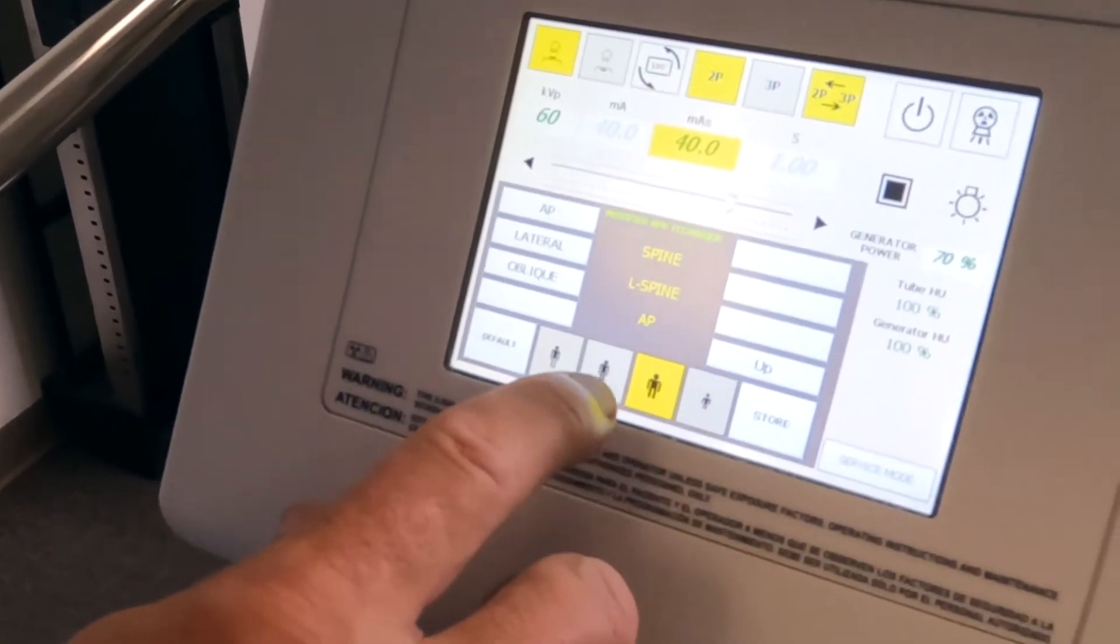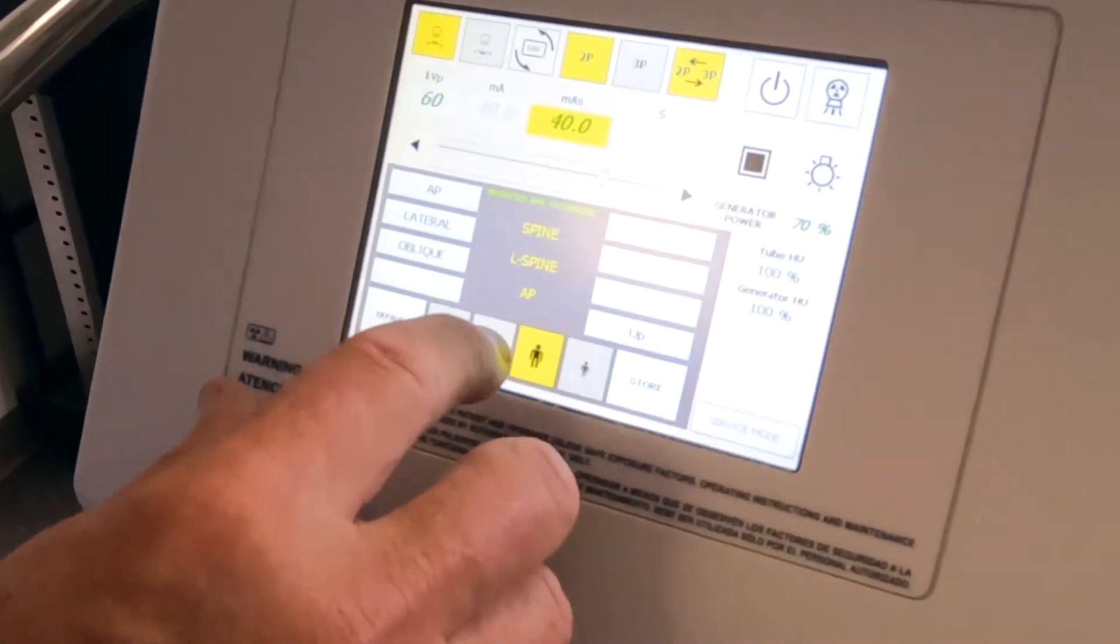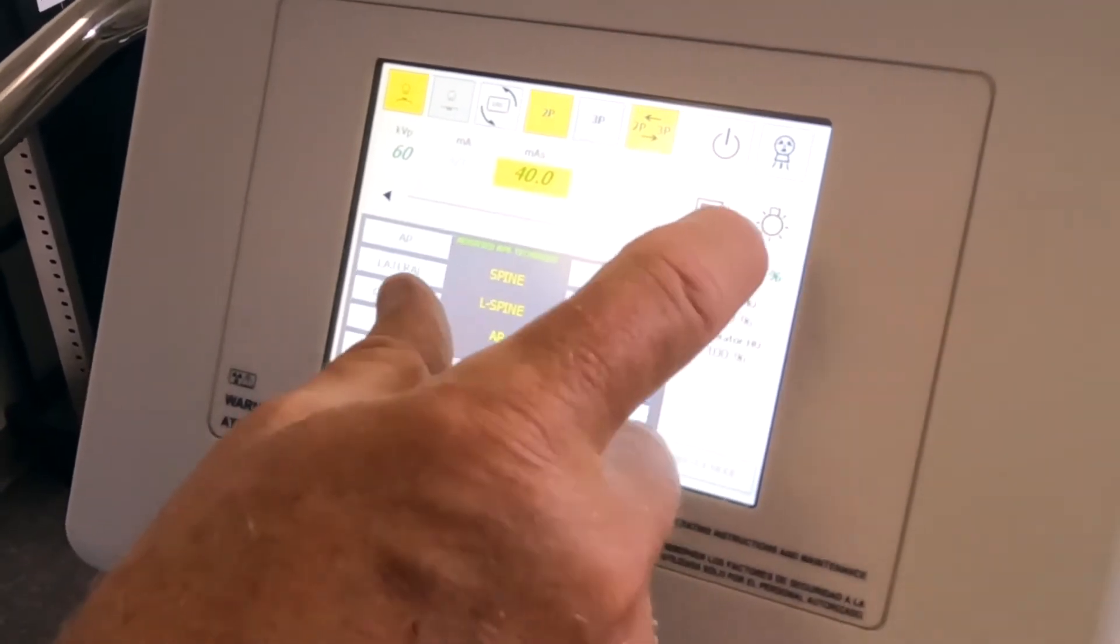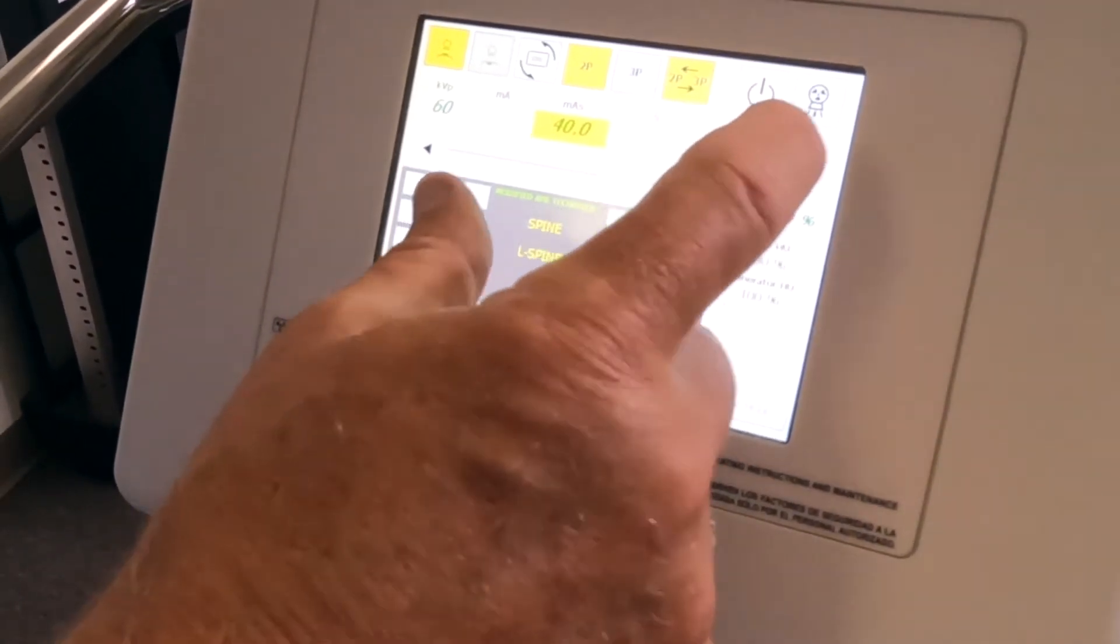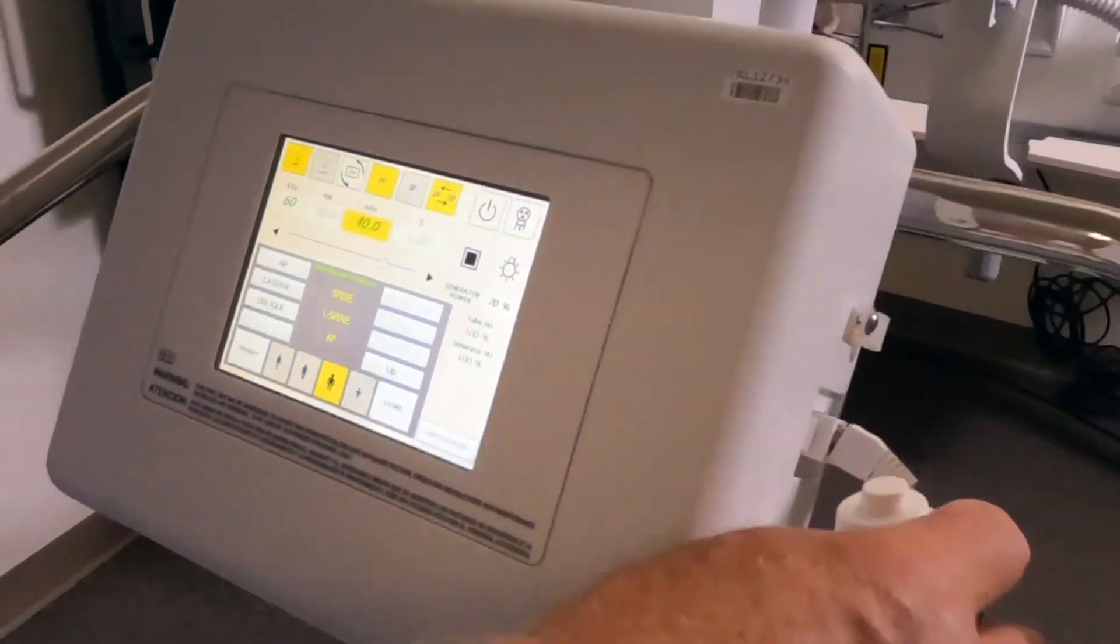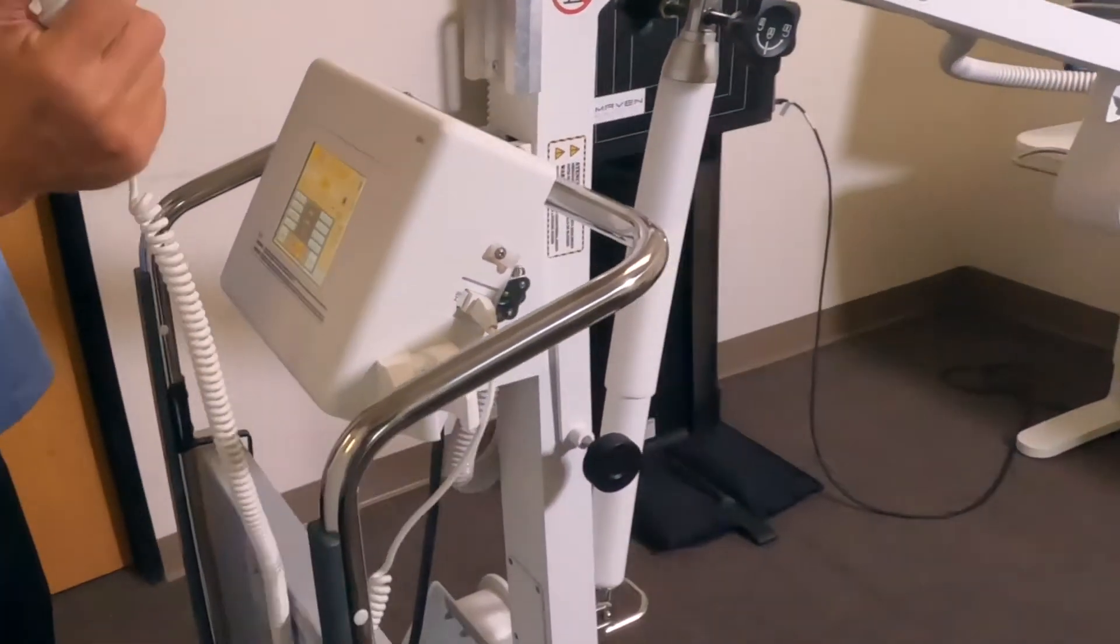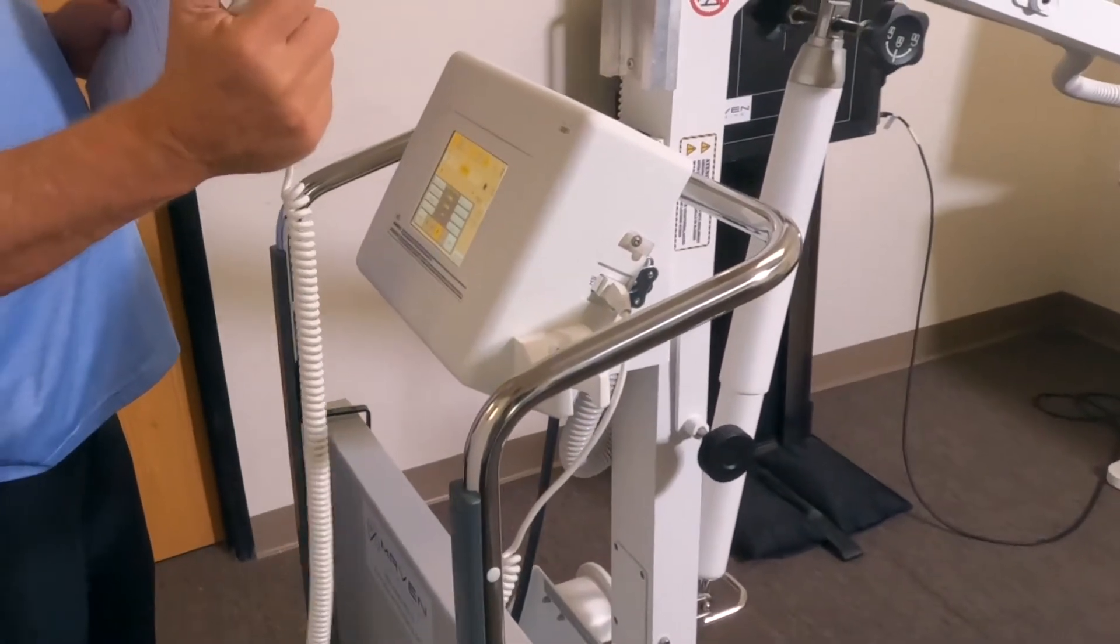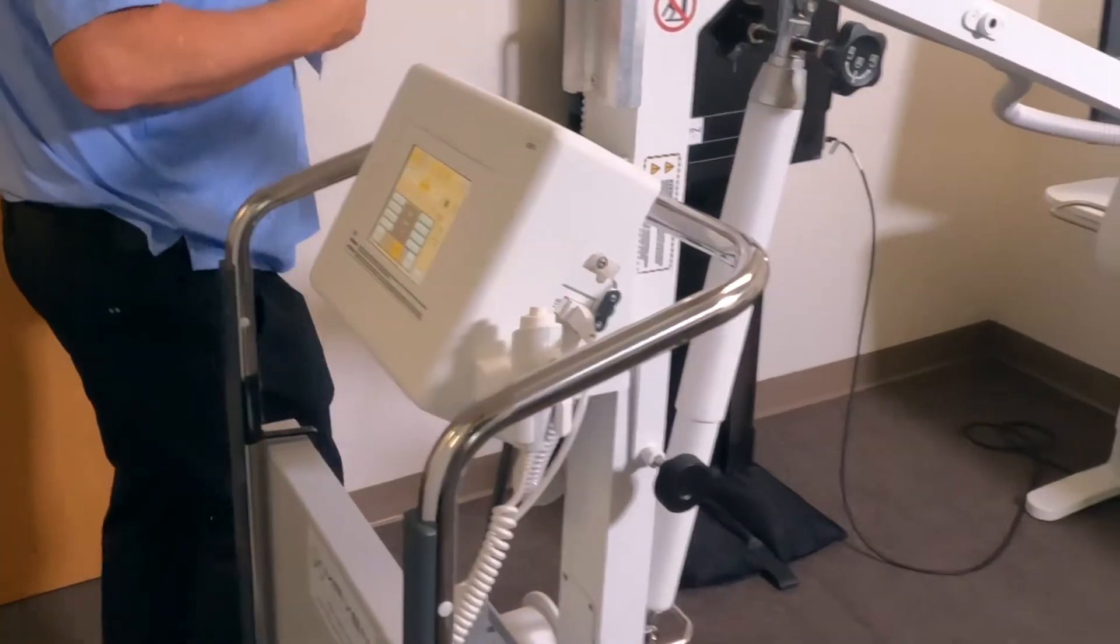Then we set the large focal point. We've clicked on that—that's the small, this is the large. Then what we do is press the trigger button until you hear the beep.